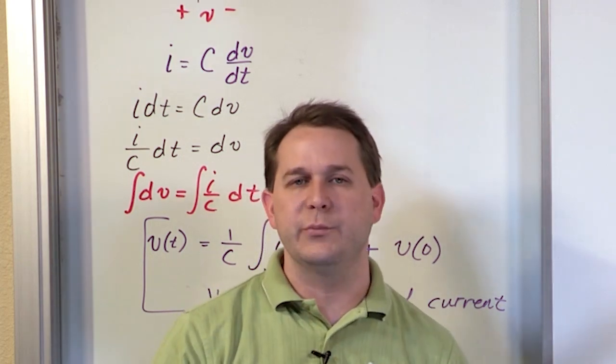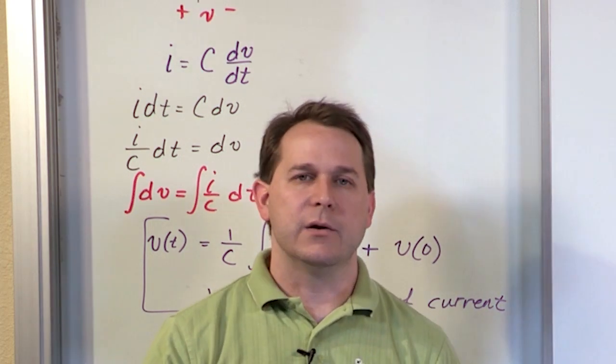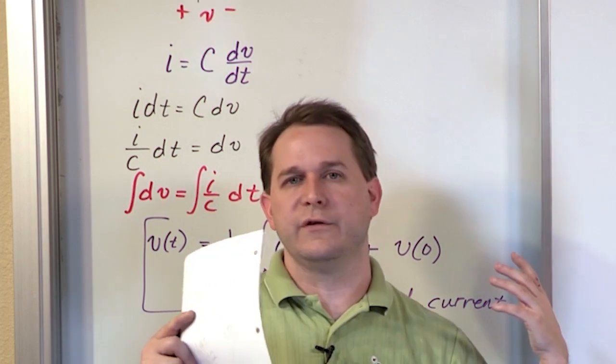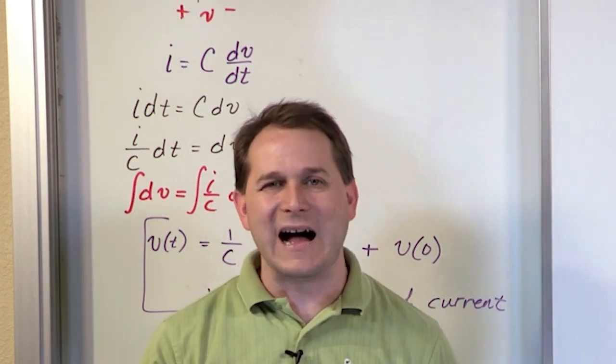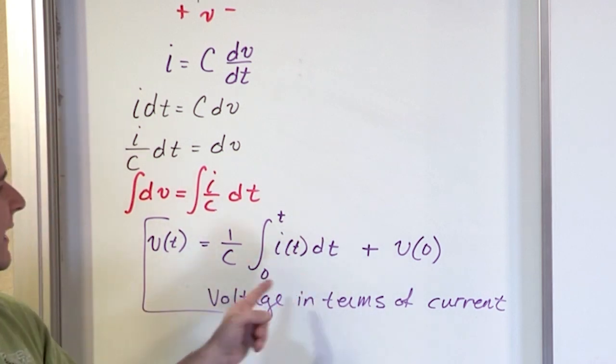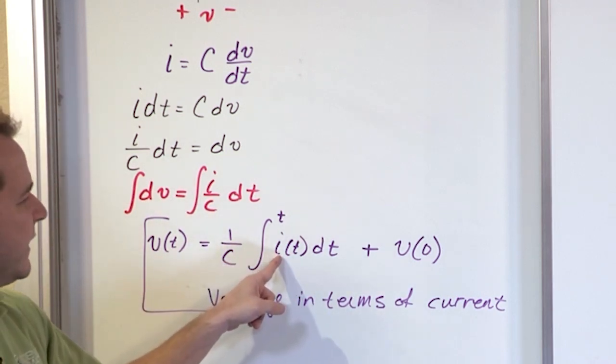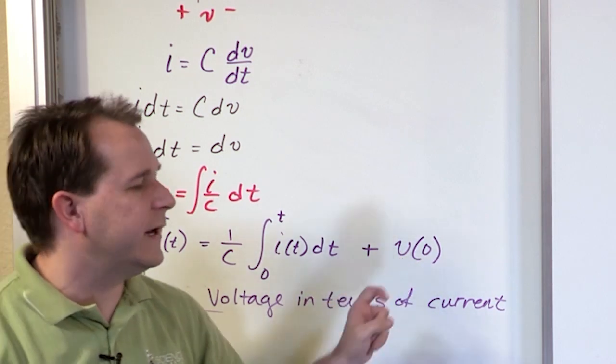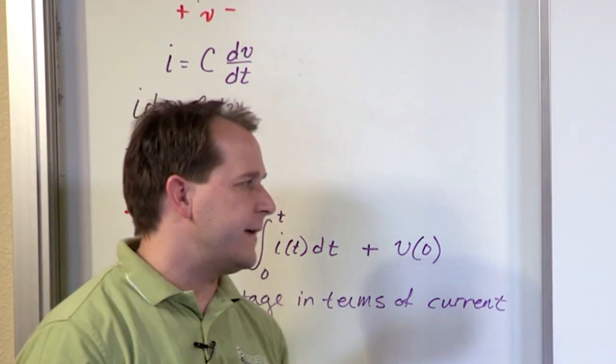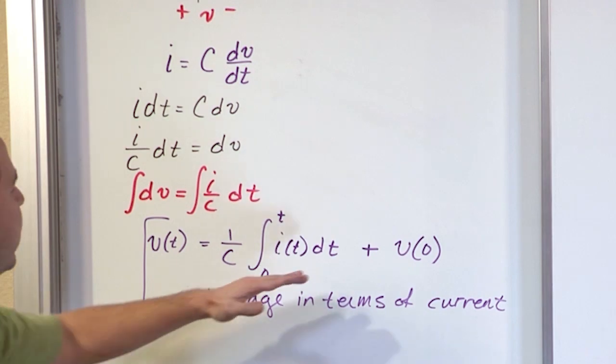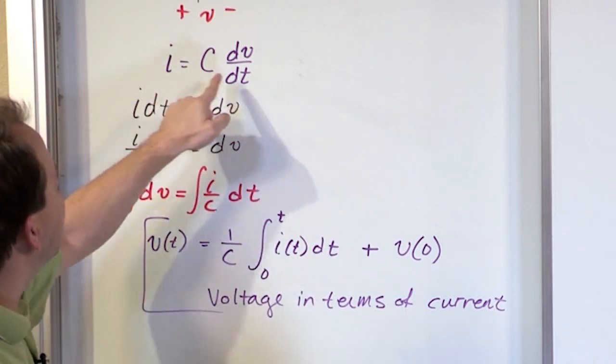When we had v equals l di dt, and then we turned around and solved for i, it pretty much looked exactly like this, except this was one over l here. This was a v of t in here, and this was i, the initial current at time zero there. So it's basically the same thing. The reason it comes down to be the same thing is because it's got the same relation.